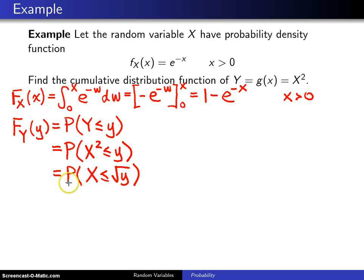When you look at this and see that this is the probability that X is less than or equal to something, you think of this as the CDF of something, namely X's CDF evaluated at the square root of Y.